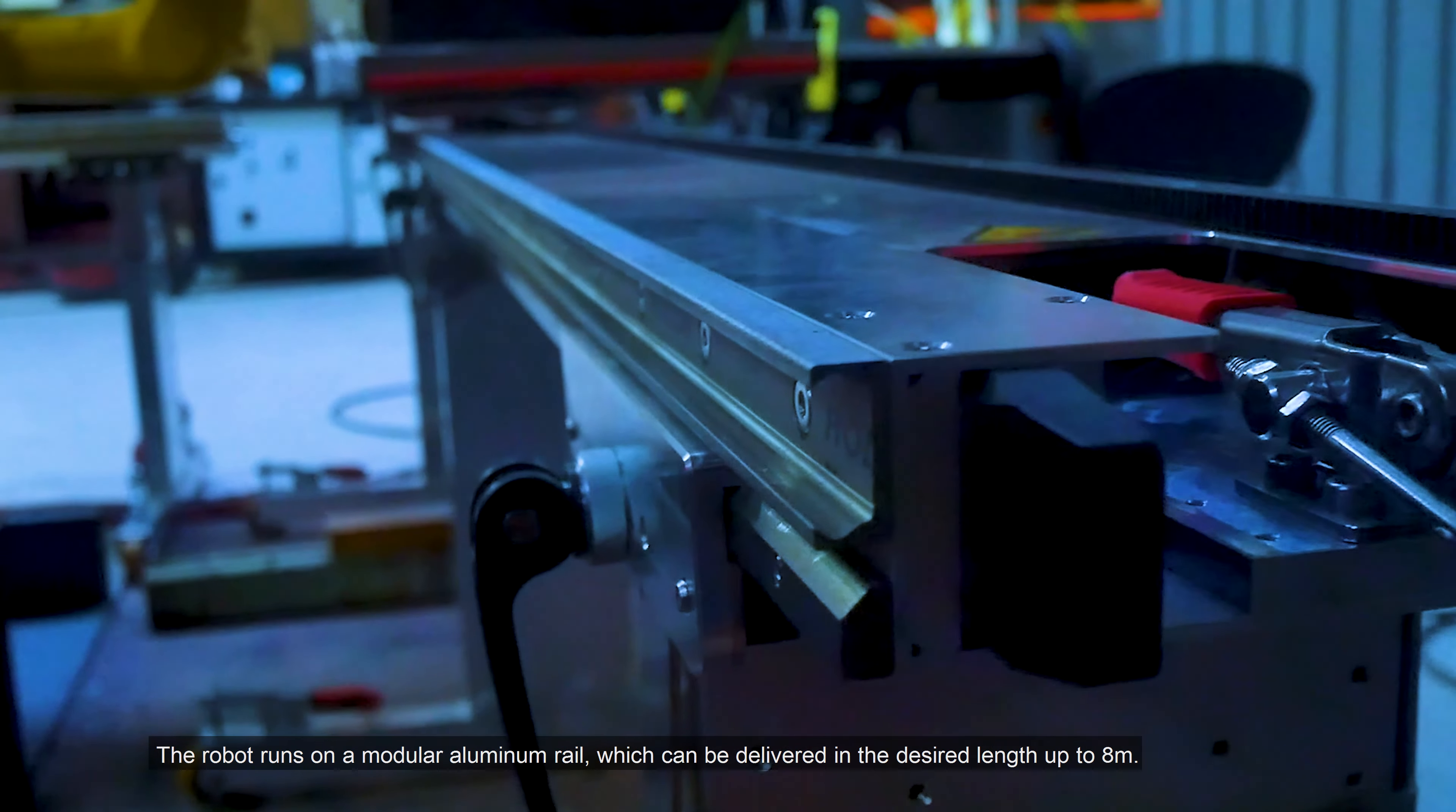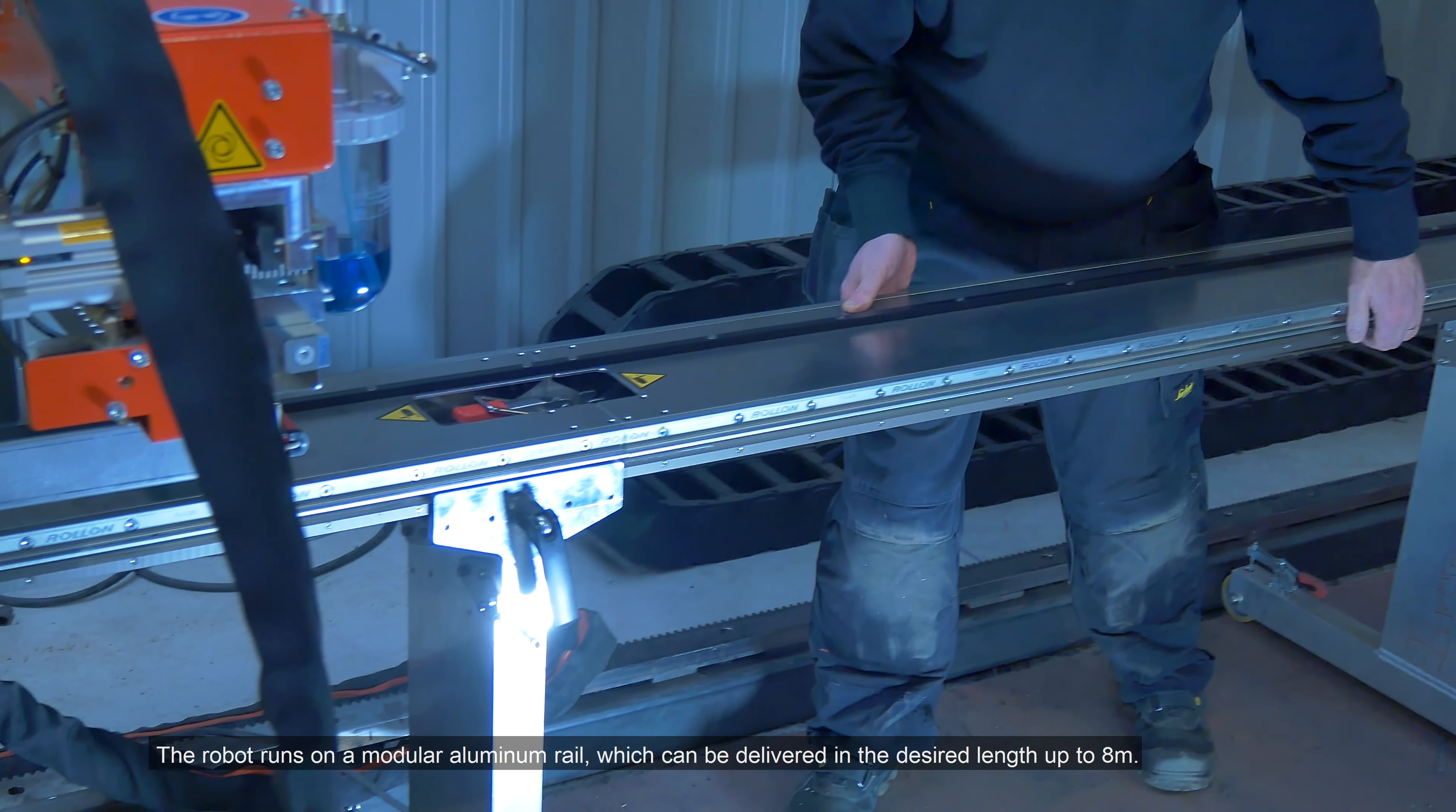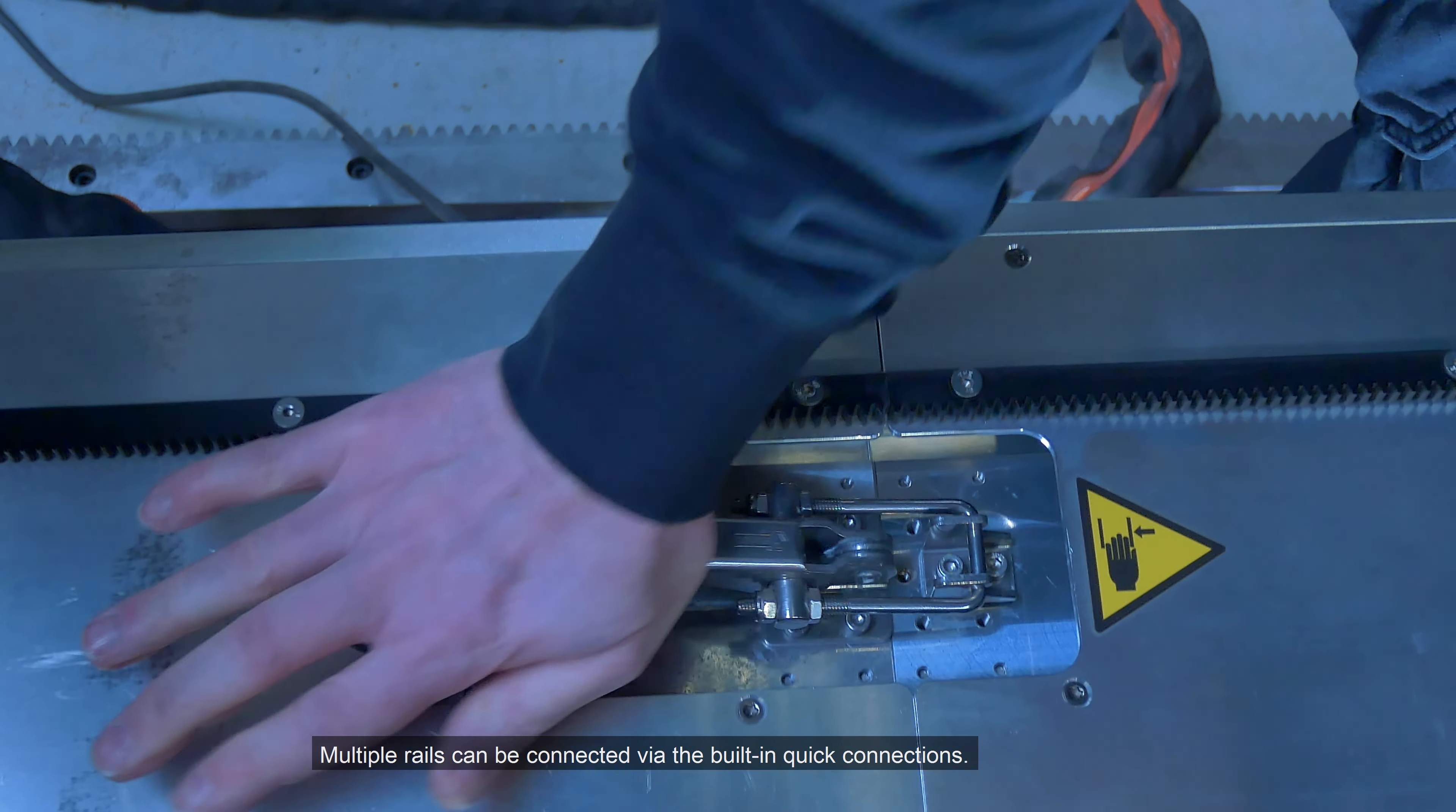The robot runs on a modular aluminum rail, which can be delivered in the desired length up to 8 meters. Multiple rails can be connected via the built-in quick connections.